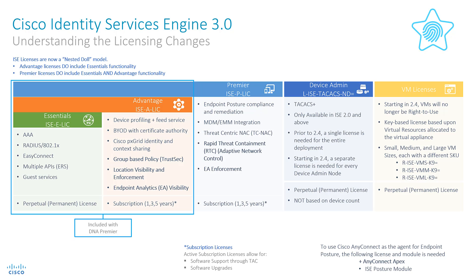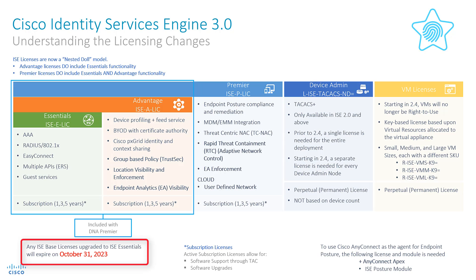User Defined Network has been added as the first cloud feature. This brings us to the change everyone has been waiting for. The lowest licensing level is no longer a permanent license. ICE Essentials is now a subscription-based license. Once you upgrade to ICE 3.0, your licenses will be converted to the new tiers and your Base licenses, which are now Essentials, will expire on October 31, 2023.